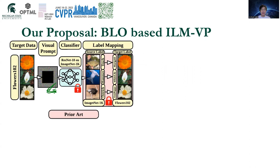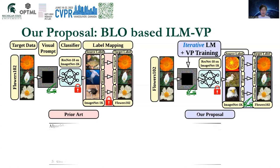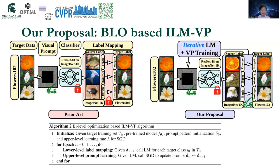We propose ILM, which means iterative label mapping, to address this question. Previously, the label mapping is hard-coded at the beginning of visual prompting training and kept fixed during the whole training. We believe that with the guidance of the intermediately trained input perturbation, we can find a better label mapping. Therefore, we incorporate the label mapping design into the training process. We formulate the problem as a bi-level problem, which comprises the lower-level problem as label mapping and the upper-level problem as the prompt learning, and the two problems are optimized alternatively.